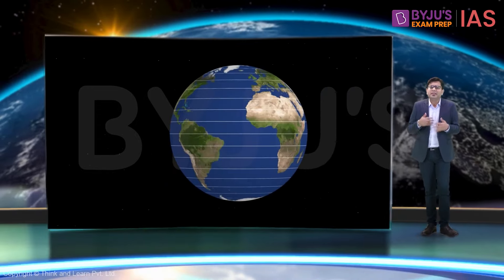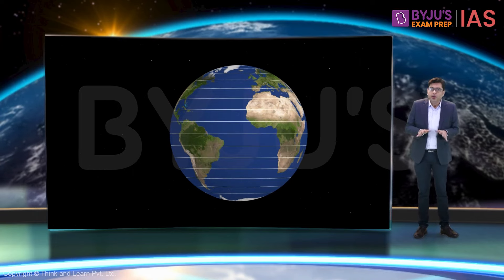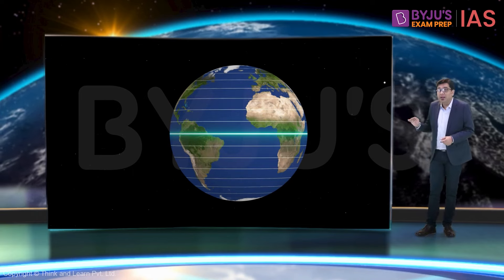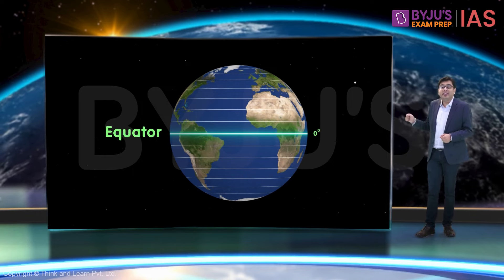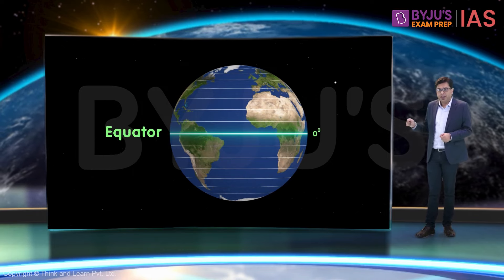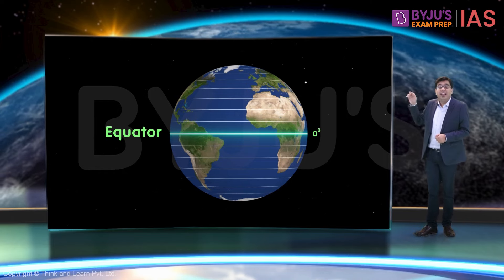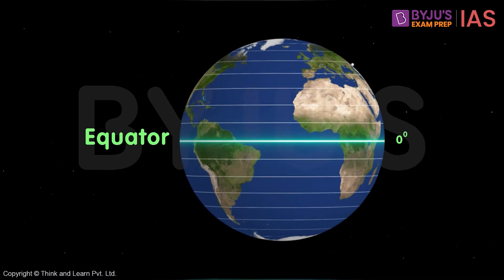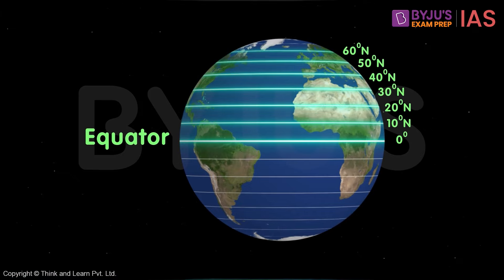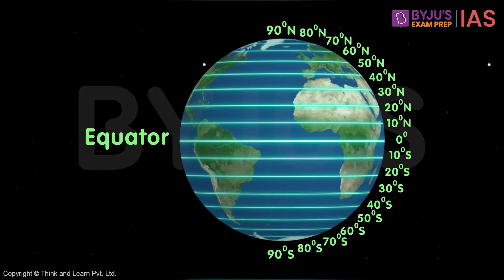Now that we know what latitudes and longitudes are and why they were conceptualized, let's get acquainted with how these lines are named. Starting with latitudes: the one in the middle is called the equator and it is located at 0 degrees. As we move towards the north, the latitude number increases — 10 degrees north, 20 degrees north — all the way up to 90 degrees north at the pole. Similarly, the same applies for the southern hemisphere.